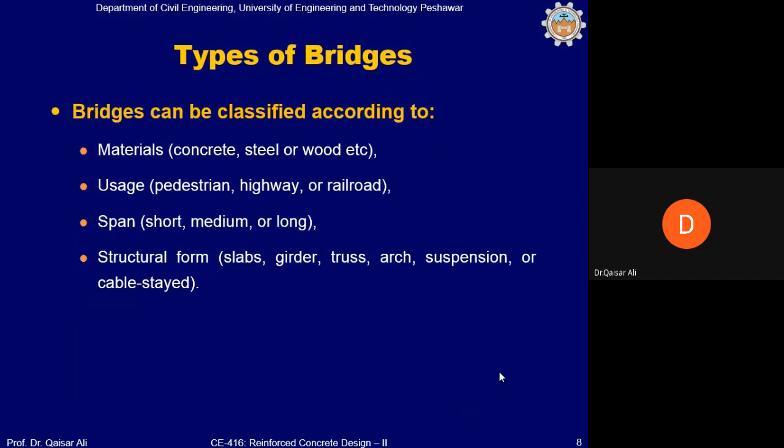Bridges can be classified in many ways. According to material: concrete, steel, and wooden bridges. According to usage: pedestrian, highway, or railroad bridges. According to span: short, medium, or long. According to structural form: slab bridges, girder bridges, truss bridges, arch bridges, suspension bridges, and cable-stayed bridges. There can be many types depending on the criteria of classification.